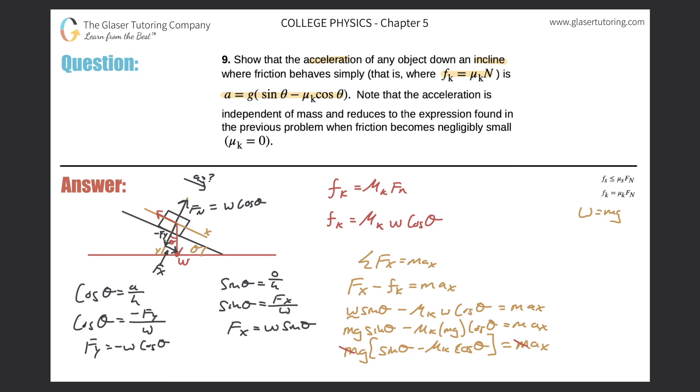Now what do we have left? Well look at what we got guys, we got g times (sine theta minus mu_k cosine theta) equals a_x. And doesn't that look like the most beautiful thing you've ever seen? There it is, it's the same exact thing up there.